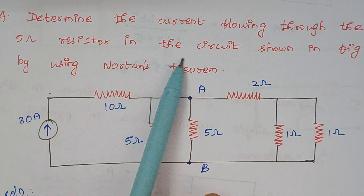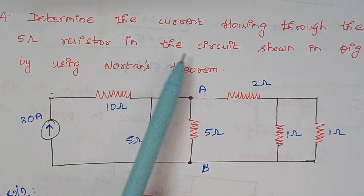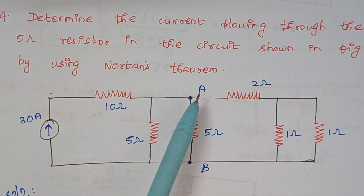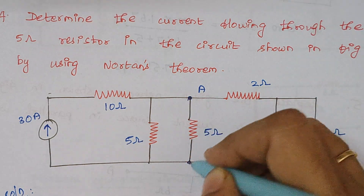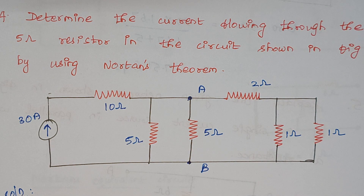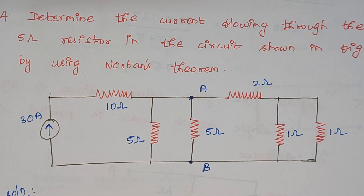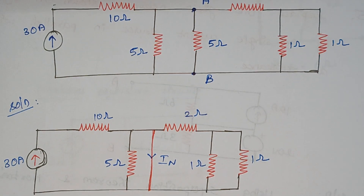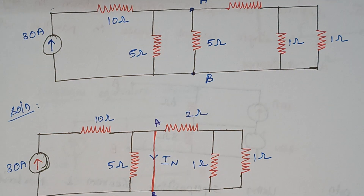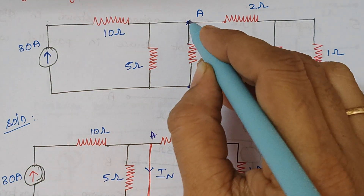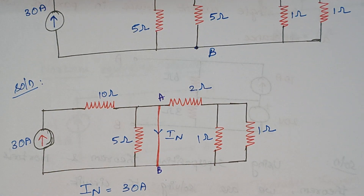Our next problem is: determine the current flowing through the 5 ohm resistor in the circuit shown in the figure by using Norton's theorem. We need to calculate the current that flows through this 5 ohm resistor, which is mentioned as terminals A and B. As usual, we have to short circuit the terminal — that is the first step to calculate the short circuit current. After short circuiting terminal AB, we have a circuit diagram like this, where A and B are marked.